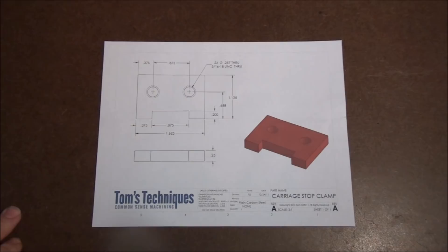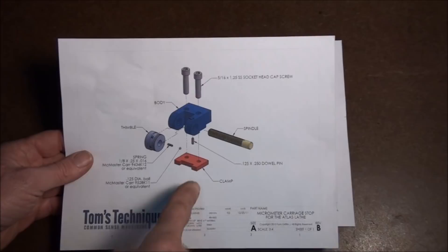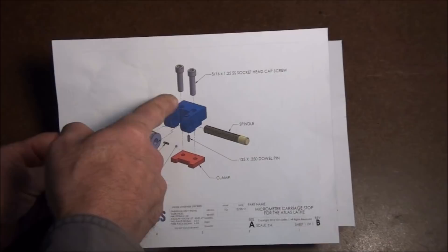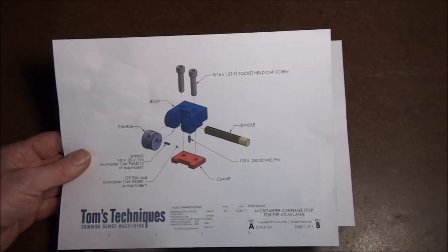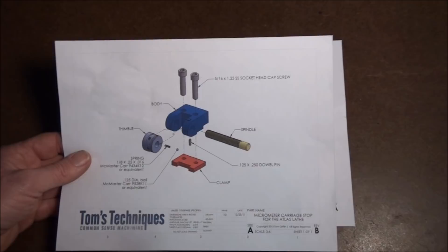The next part in line is the clamp that goes on the bottom of this carriage stop. If you look at the assembly drawing, the clamp is just a piece of quarter inch steel with a couple of tapped holes in it to line up with the holes that we put in the body. A couple screws go through it and when tightened up, pull the clamp up against the bottom of the ways and locks the carriage stop to the way, the front way of the lathe.